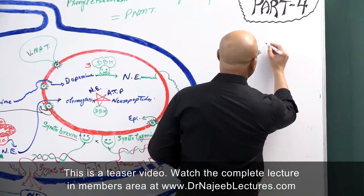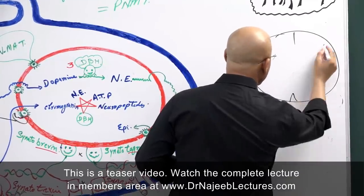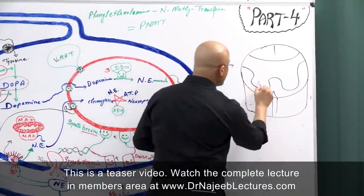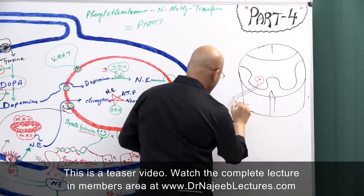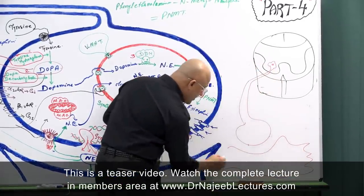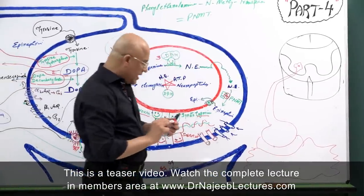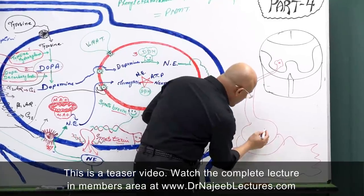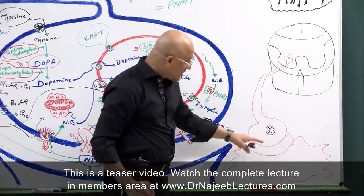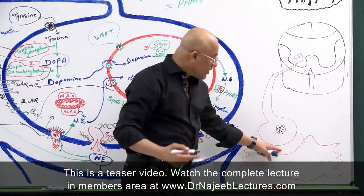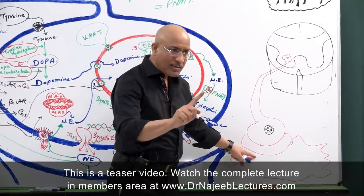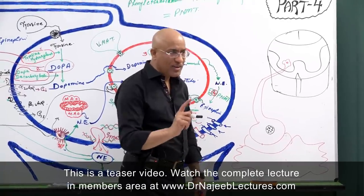To understand this, consider the spinal cord with alpha motor neurons attaching to muscle at the neuromuscular junction. At these neuromuscular junctions on skeletal muscle, vesicles are loaded with acetylcholine. When an action potential comes, exocytosis occurs, acetylcholine is released, generating an action potential in the muscle membrane and eventually causing contraction — this is cholinergic transmission at the neuromuscular junction.